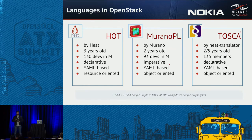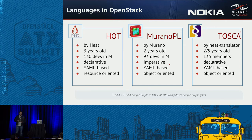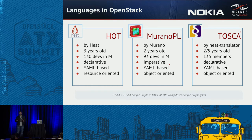The three languages are HOT, MuranoPL, and Tosca. We selected these languages because they are available natively in OpenStack. For HOT, the implementation is obviously Heat. For MuranoPL, it is Murano. For Tosca, there is a project called HeatTranslator, which is responsible for translating a Tosca definition to a Heat template and deploying it through Heat. So basically you take your Tosca template and deploy it using Heat, meaning you can only use capabilities available in Tosca that are also available in Heat.